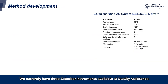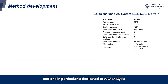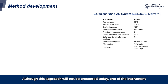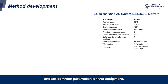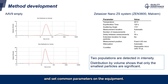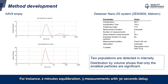We currently have three Zetasizer instruments available at Quality Assistance, and one in particular is dedicated to AAV analysis in a biosafety level 2 environment. Although this approach will not be presented today, one of the instruments can also perform measurements in multi-angle mode, which provides information on particle concentration in addition to size. For method development purposes, we used an empty AAV9 sample and set common parameters on the equipment — for instance, two-minute equilibration and three measurements with 30 seconds delay.